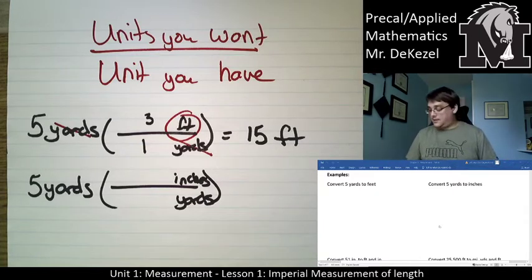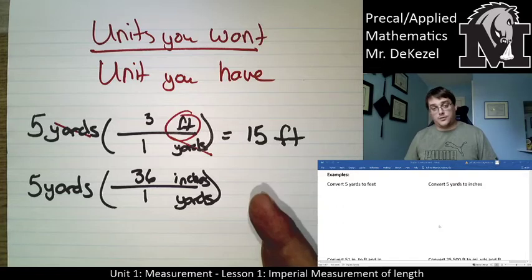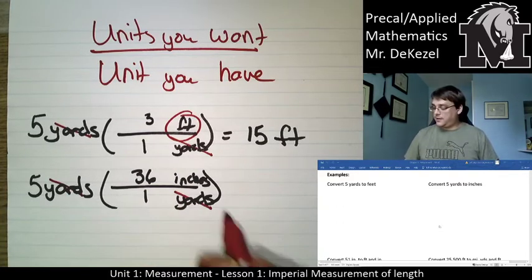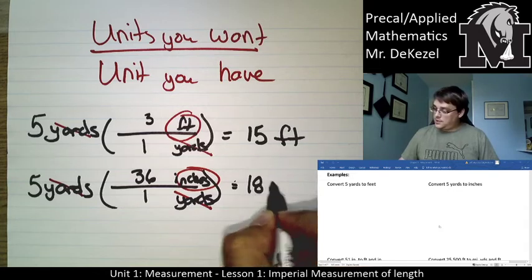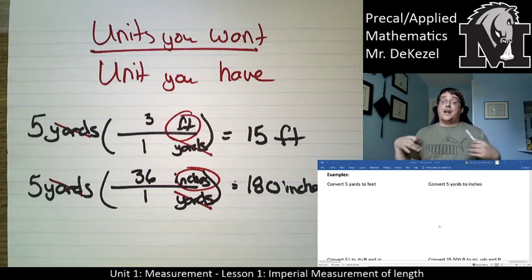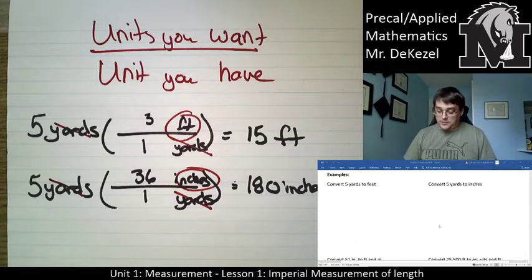So we multiply five yards through: five times 36 is 180 inches. Beat it into your head — units that you want go on the top, units that you have go on the bottom. That will work for every single one.